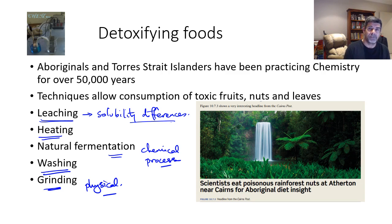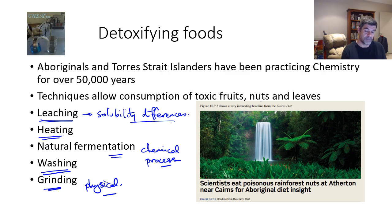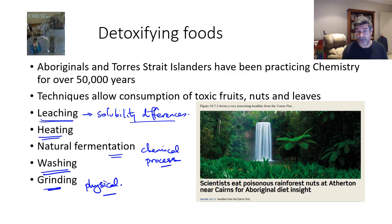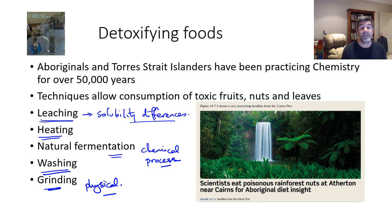The combination of each of these different types of techniques — both physical and chemical processes — are what have been used for thousands of years in order to take advantage of the native material that the local inhabitants found all around them. This focus area of your syllabus is best done as a case study, and we will be looking in class at specific examples of where these processes of chemistry have been applied by Aboriginal and Torres Strait Islander peoples in order to safely consume fruits, nuts and leaves in their environment.